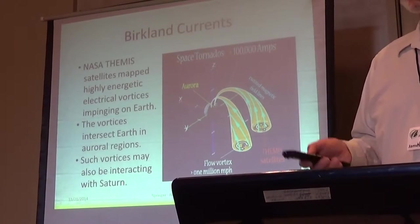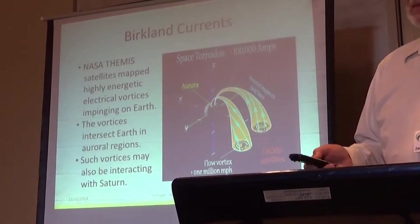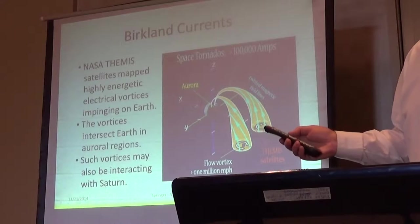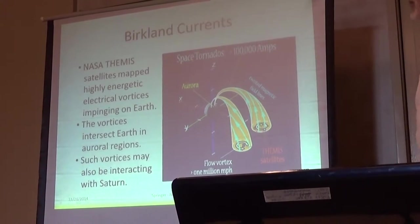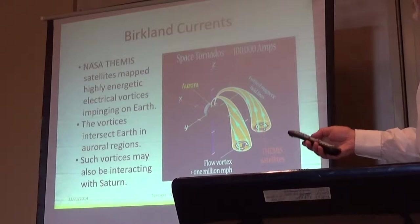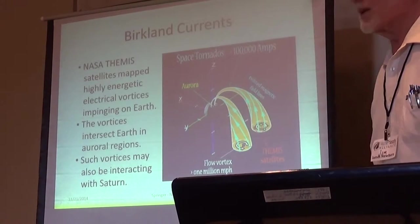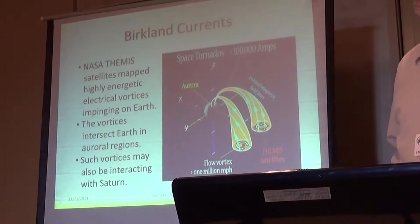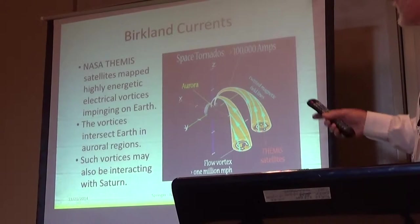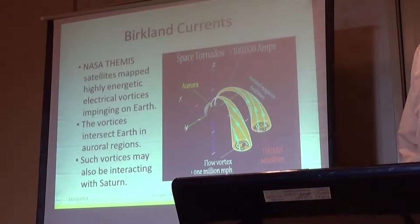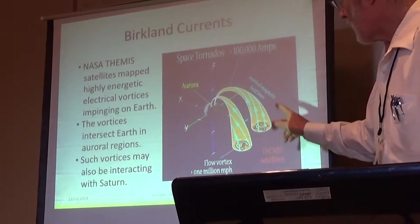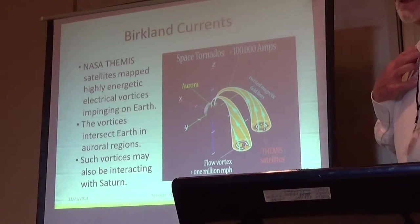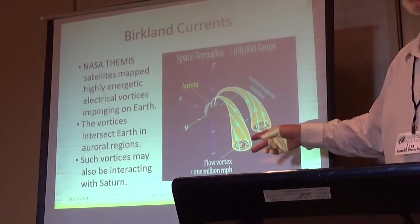This paper that Barry has is a conjecture. It's not based on experiments, not based on analyzing, but just an attempt to explain why we have a six-sided structure in space. So he's looking at the Earth, where we have Birkeland currents coming into the polar region of the aurora. They were found by the THEMIS satellites. And they've got very high currents, in excess of 100,000 amps. And they're rotating very rapidly, 1 million meters per hour.